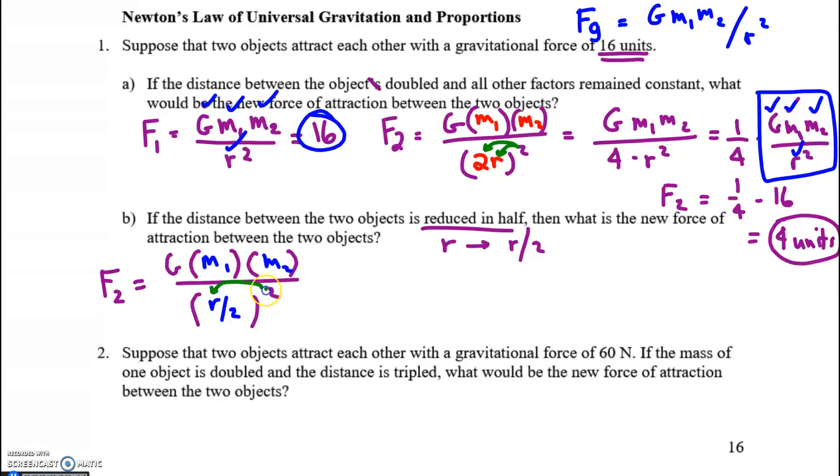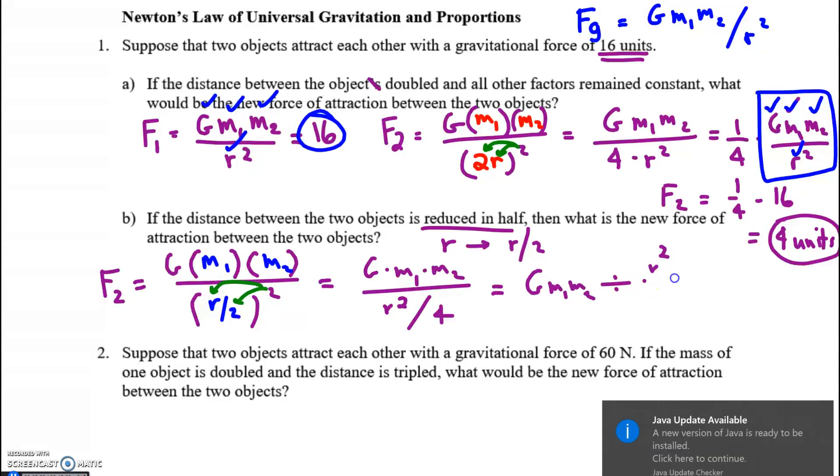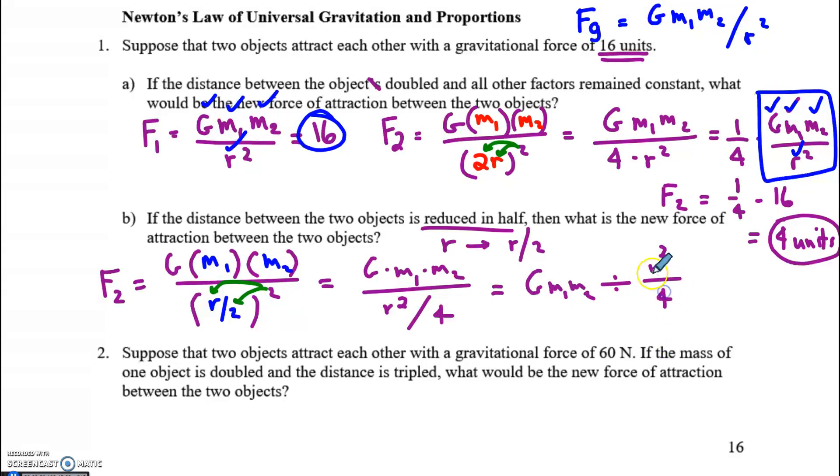Always, we distribute the square to the factor and also to R. And I have G M1 M2 over R squared divided by 4. Here's what I'm doing. I'm taking G M1 M2 and I'm dividing by R squared over 4. Instead of dividing by R squared over 4 we can multiply by the reciprocal.